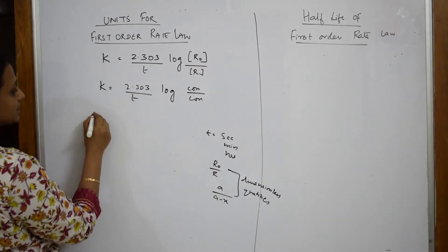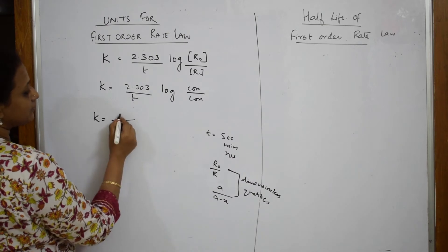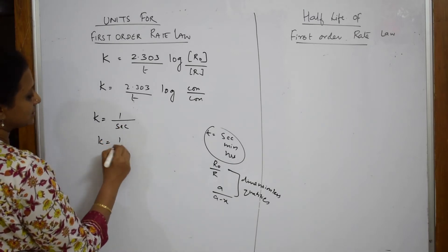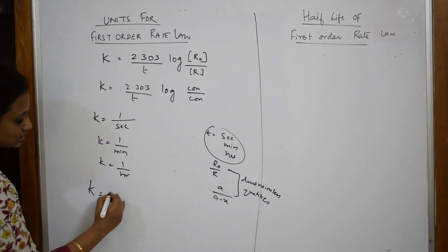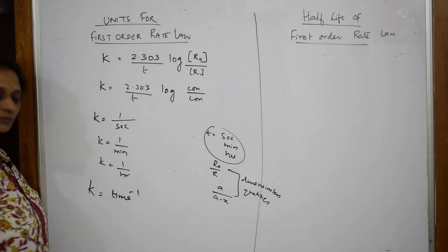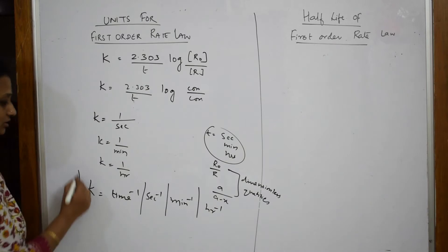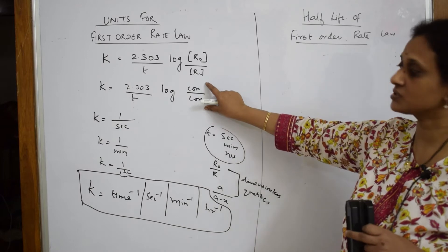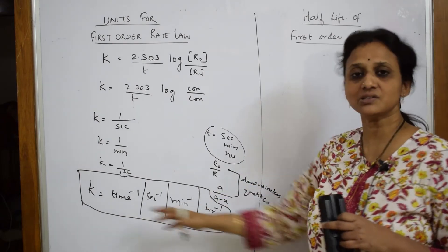Now, here this has become log concentration by concentration, correct? We very well know r0 by r or a by a minus x. All these are dimensionless quantities, correct? Even mole per liter, mole per liter, it is the same, right? They get cancelled. So, dimensionless quantity. So, what factor is left out? This is ruled out. This is also okay, 2.303 that value. Now, only thing left is t. So, we have 1 by t which can be measured as either seconds, it can be measured as minute or it can be measured as hour. So, for the first order kinetics, the units are k is equal to time inverse or second inverse or minute inverse or hour inverse. This is your unit for your first order reaction.